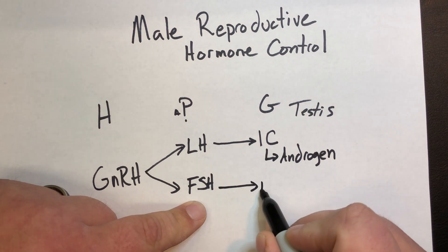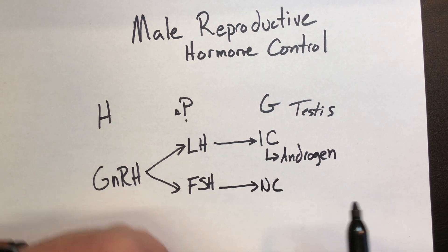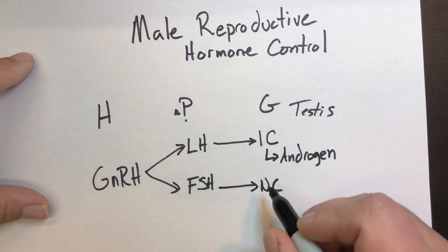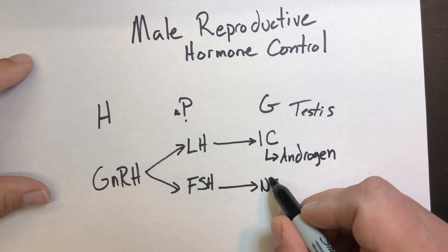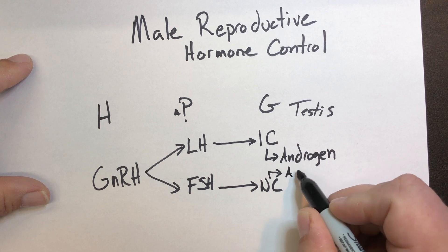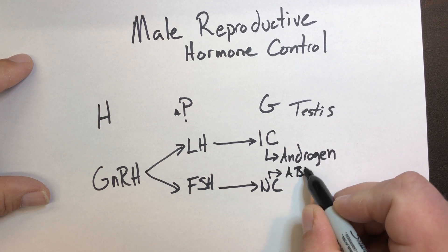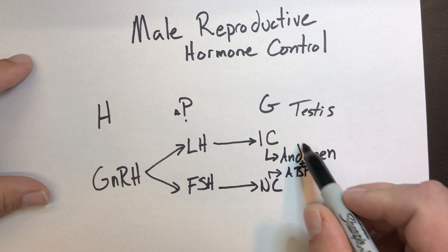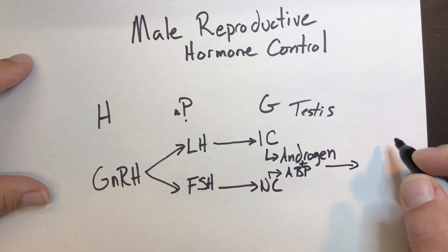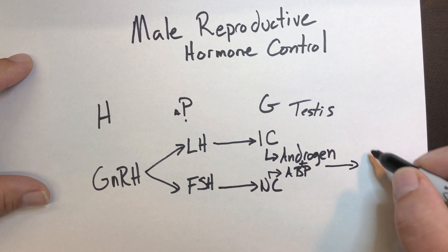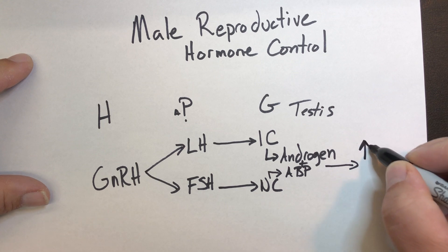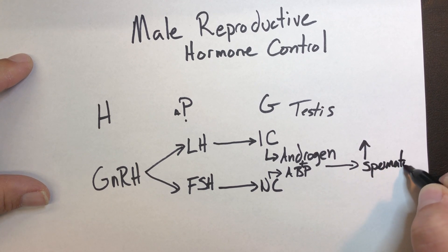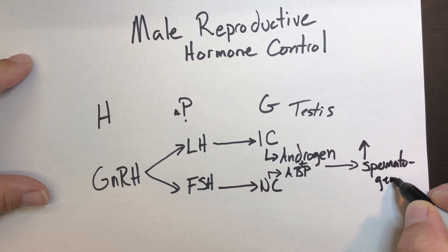FSH's target is the nurse cells, also called the Sertoli cells. The output here is ABP. When androgen and ABP combine together in the seminiferous tubules, we see an increase in spermatogenesis.